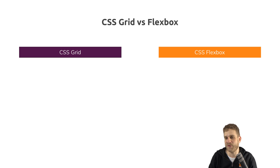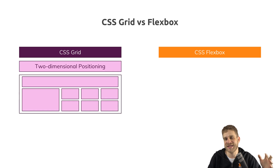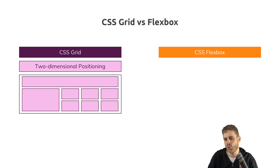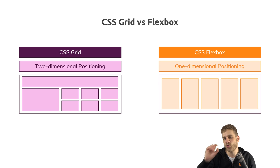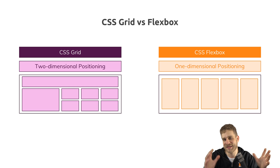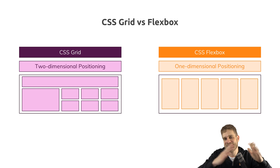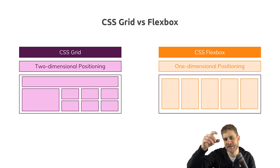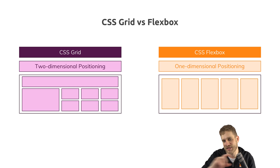Flexbox, on the other hand, is for laying out a single row or column of elements. So CSS Grid is about two-dimensional positioning — we have rows and we have columns — whereas Flexbox is about one-dimensional positioning — we have either a row or a column. You can actually set up Flexbox to wrap its items into a new line.